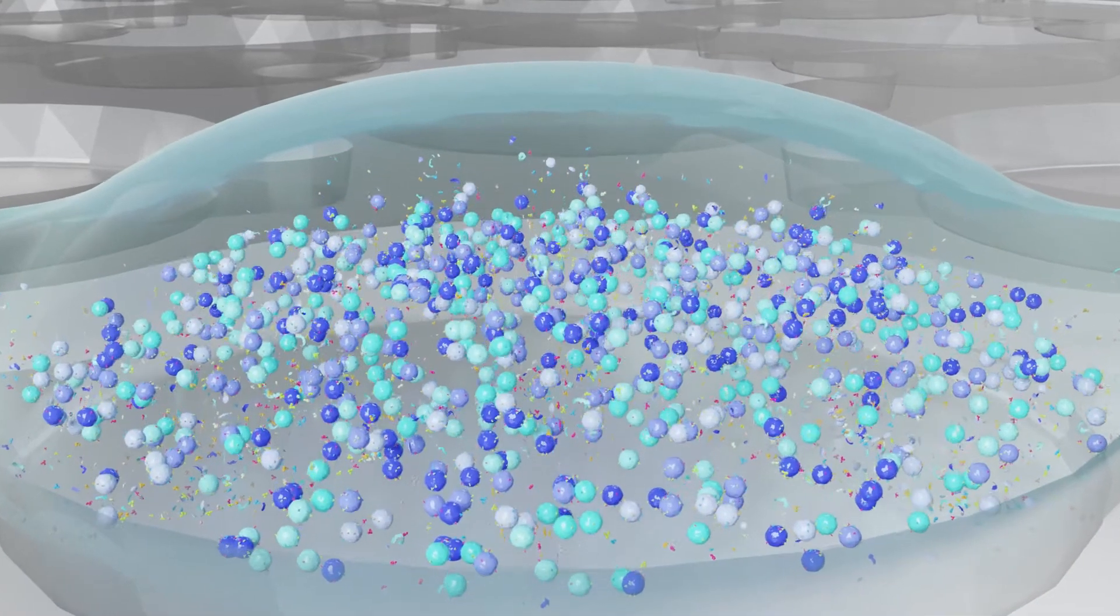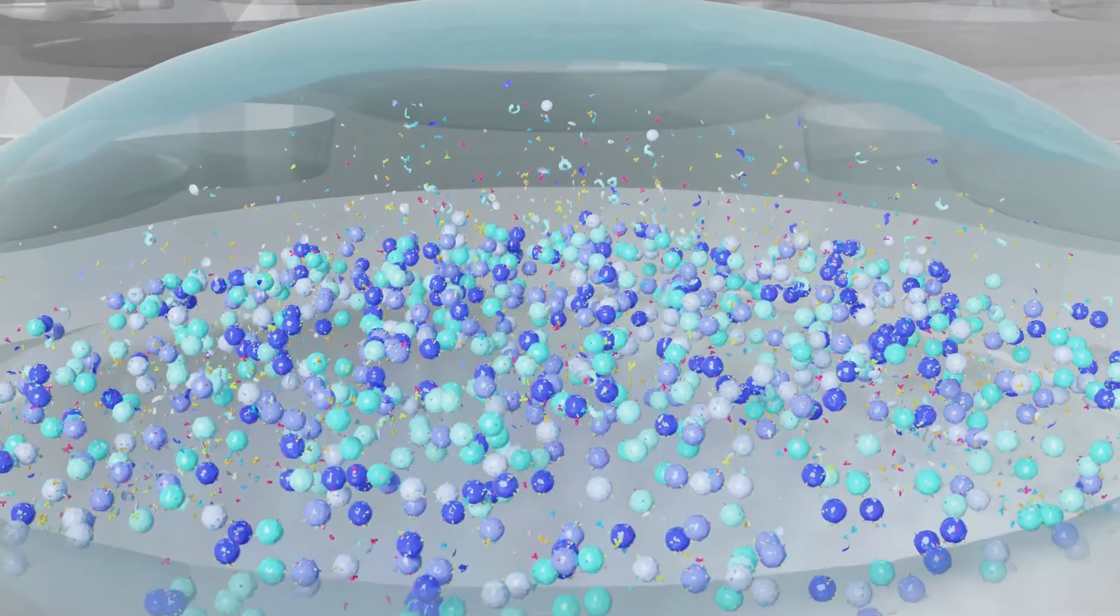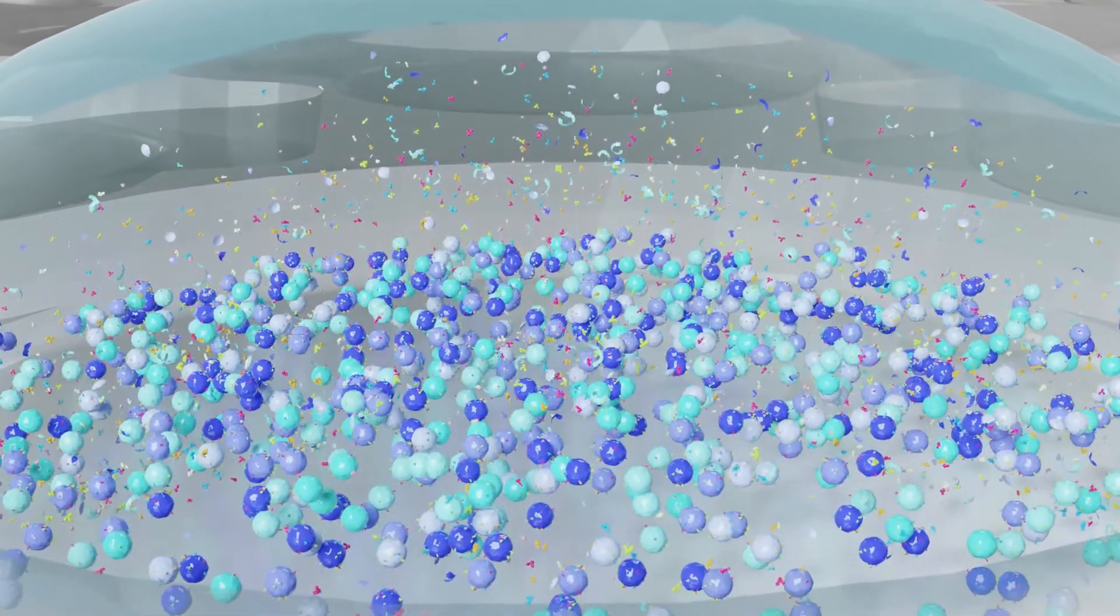Gravity then causes the cells to fall to the bottom of the wells where they settle gently on the hydrophilic coating without any physical attachment.